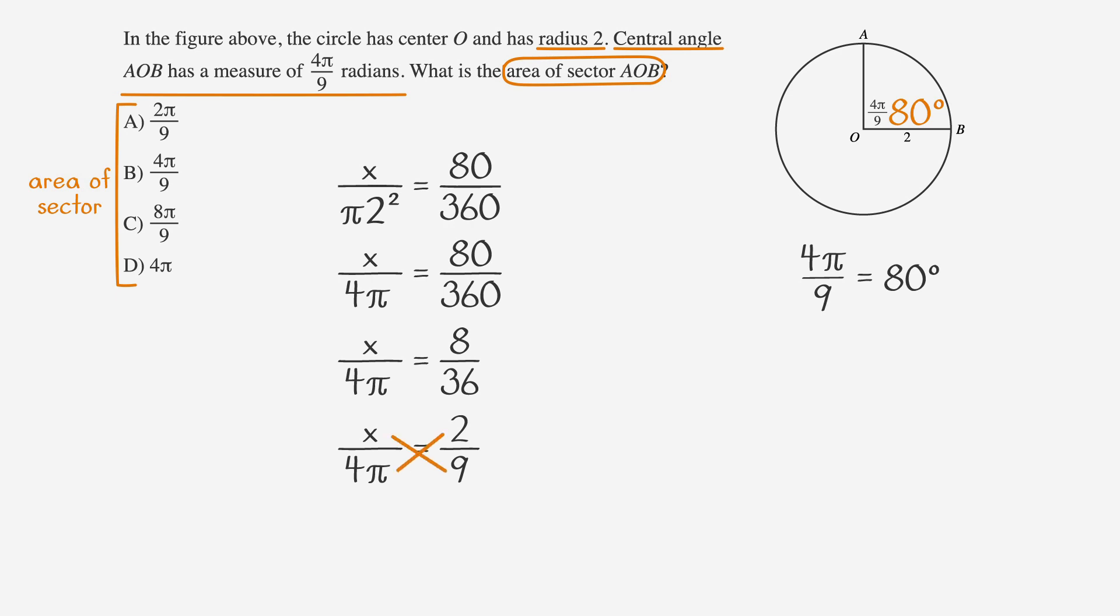Now it's time to cross multiply, and we get 9x equals 8 pi. Divide both sides by 9, and we find that our x, our sector area, equals 8 pi over 9. So c is the correct answer.